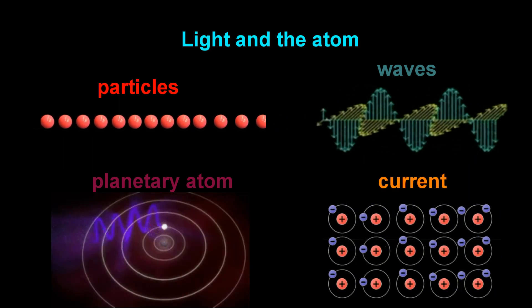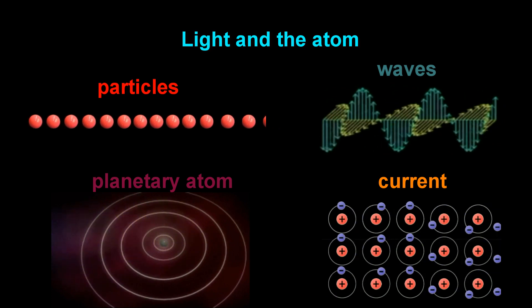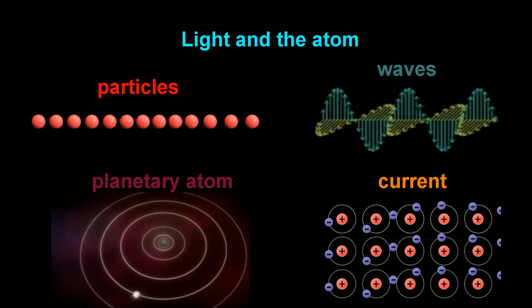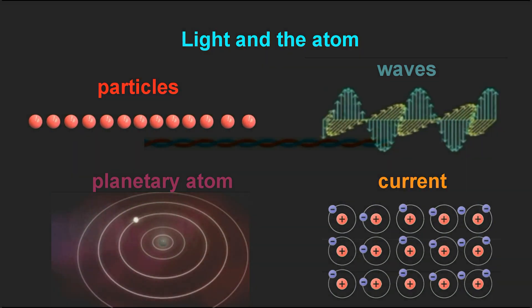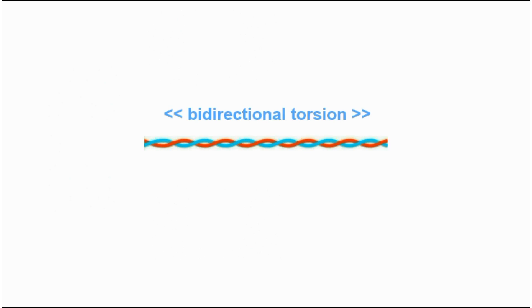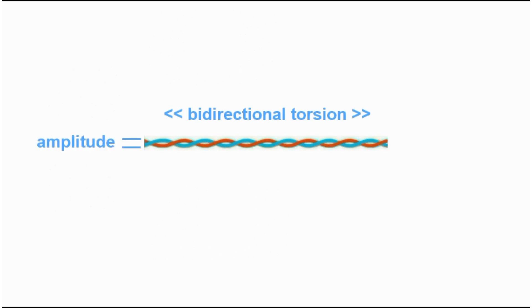What if we were to assume that light is mediated, rather, by a physical entity that has the architecture of a rope — a pair of anti-parallel twine threads? Under this proposal, light consists of bi-directional torsions propagating along a DNA-like structure.